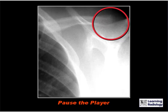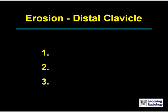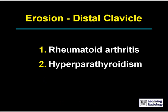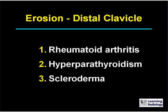Here's the next differential diagnosis. The differential is for erosion of the distal clavicle. There are three major causes. The three major causes of erosion of the distal clavicle include rheumatoid arthritis, hyperparathyroidism, and scleroderma.